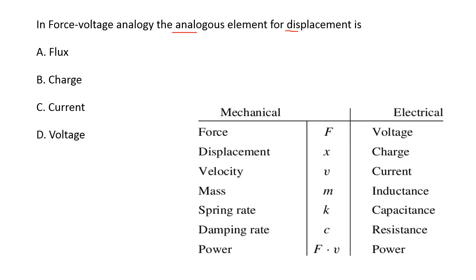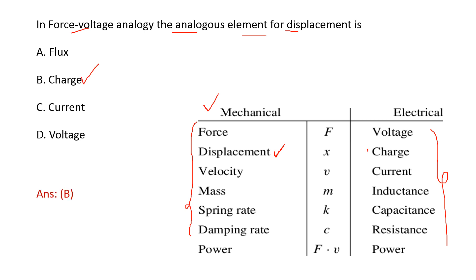This tabular column represents the force-voltage analogy — these are the mechanical quantities and these are the electrical quantities. They are asking for the analogy element for displacement. In the mechanical system, displacement corresponds to charge in the electrical system. So option B is the right answer.